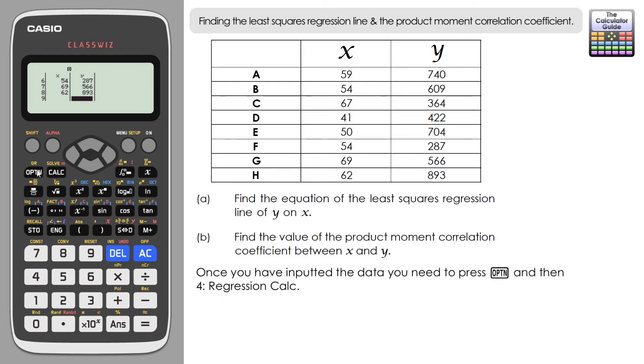So once you've inputted the data, you need to press option. And what we're interested here is option four from this menu: regression calc, option four.